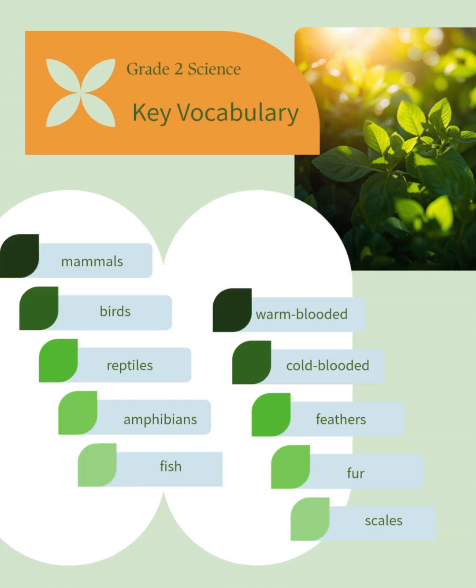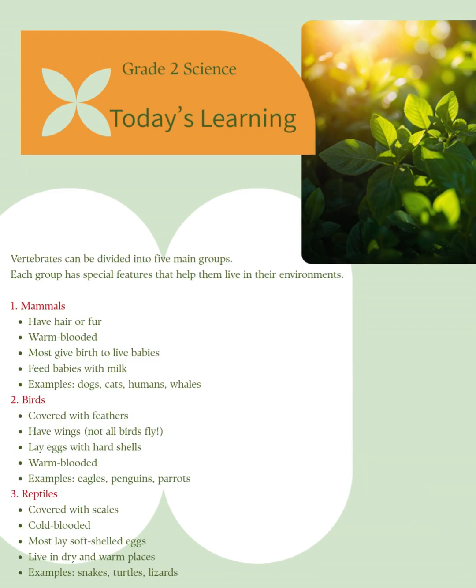Key vocabulary: Mammals, Birds, Reptiles, Amphibians, Fish, Warm-blooded, Cold-blooded, Feathers, Fur, Scales.